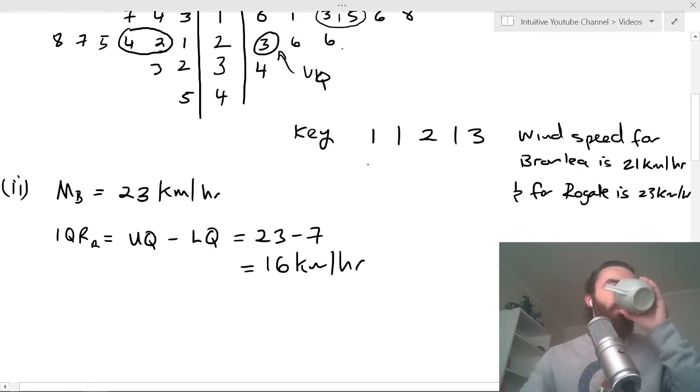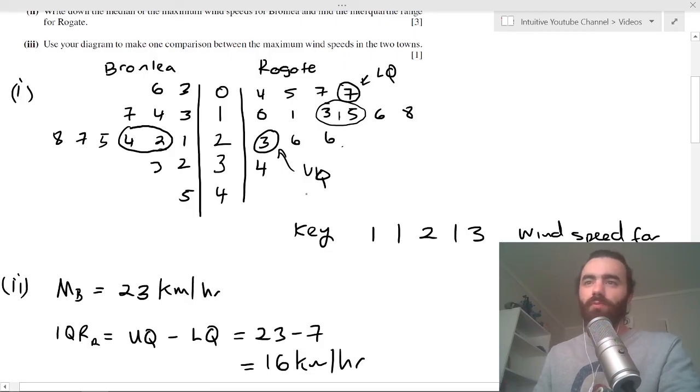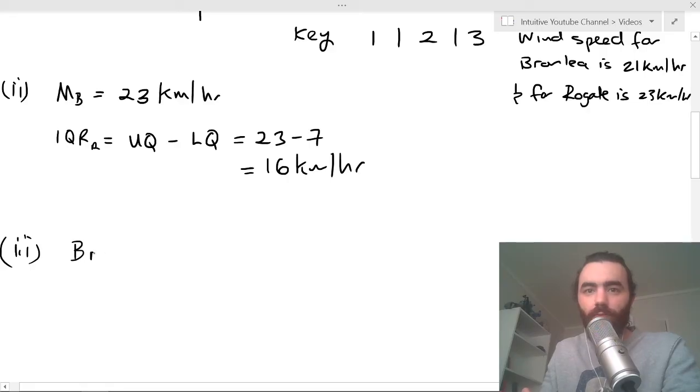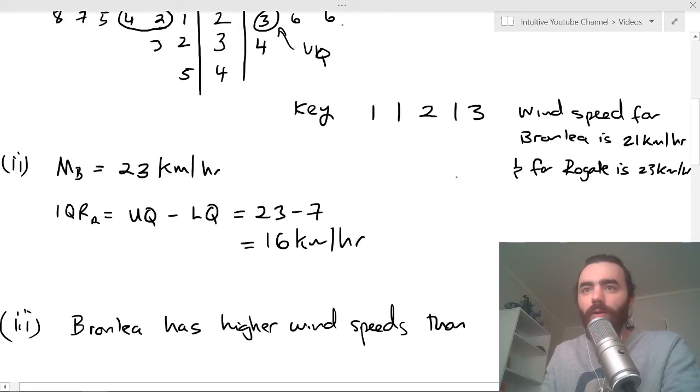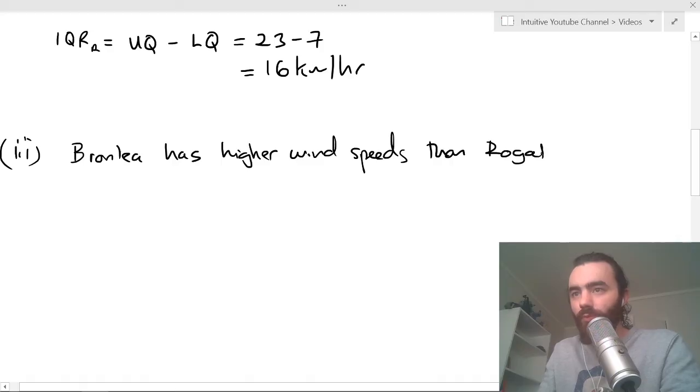And then finally, what I want you to do is use your diagram to make one comparison between the maximum speeds of the two towns. Well, if you look at this here you can see clearly that Bronley has higher maximum wind speeds. So you could say that, because you can see like you've got a lot of cluster of data points on the higher end, whereas this has a cluster of data points on the lower end for Rogate. So there's a skew to either of these data's. You could say that Bronley has higher wind speeds than Rogate, or a more flippant way to say it would be, I don't know, Bronley is windier than Rogate.